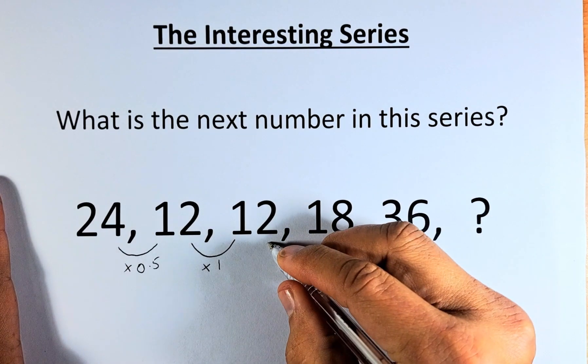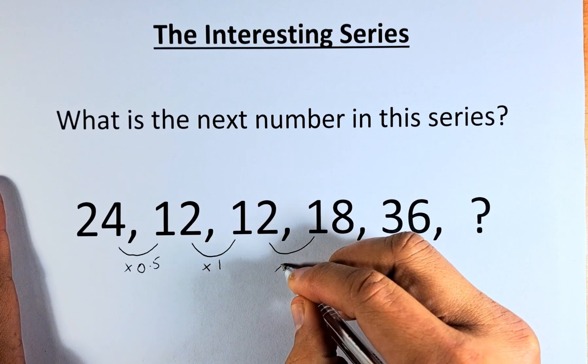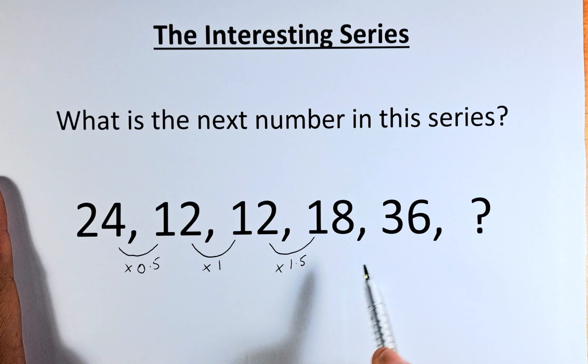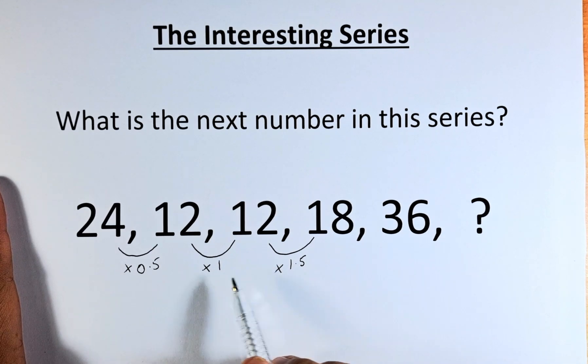The next number, from 12 to 18, we are going to multiply by 1.5. So we're multiplying by the increment of 0.5 each time: 0.5, 1, 1.5.